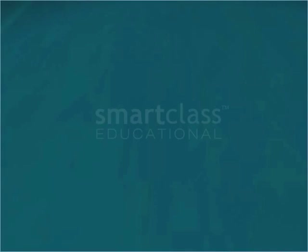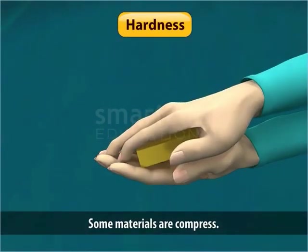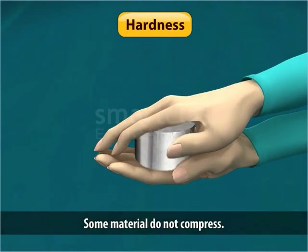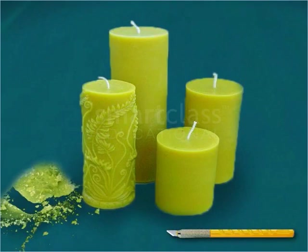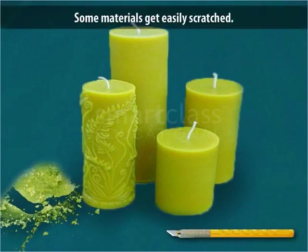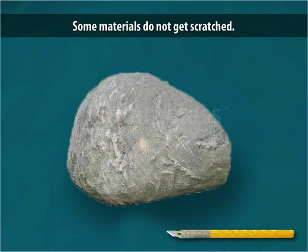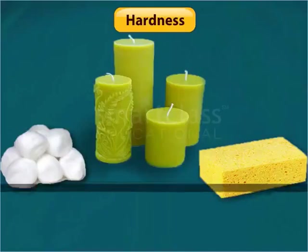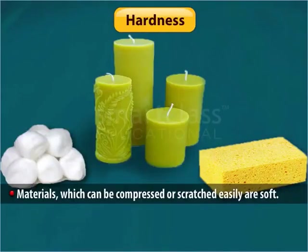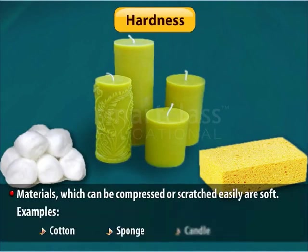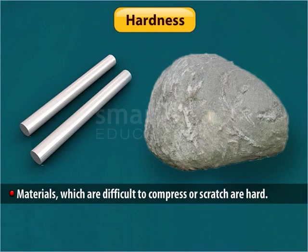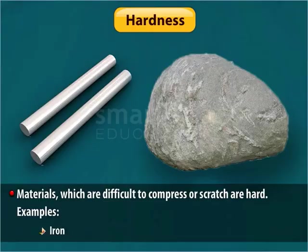The next property is hardness. If we press certain materials with hand, some of them compress while some do not. Likewise, if we stretch certain materials with a metal key, some of them get easily scratched while others do not. Materials which can be compressed or scratched easily are soft. Examples are cotton, sponge and a candle. In contrast, materials which are difficult to compress or scratch are hard. Examples are iron and stone.